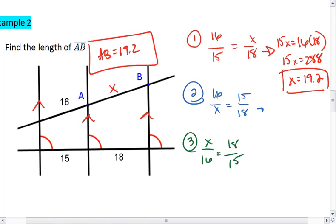Similarly, we could have found 15X equals 16 times 18 from the other proportions, getting X equals 19.2 each time.